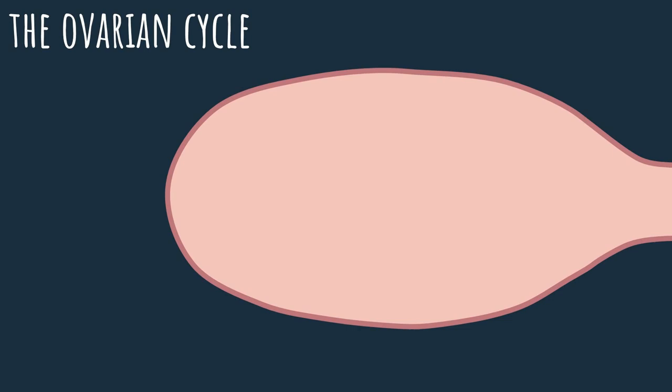In the previous lesson, we introduced the ovarian cycle. Now let's get to know it really well. We will go over all the stages of follicle maturation, from the primordial follicle to the corpus luteum. And to keep it simple, let's not trouble ourselves with the regulation of the cycle, at least not for now, because we'll cover the hormones that regulate the cycle in a separate lesson.